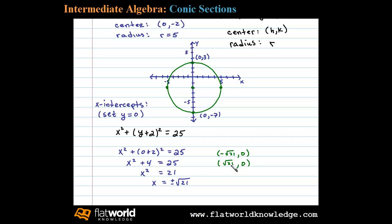The square root of 21 on a calculator is about 4.6, so that looks pretty good. This point would be positive square root of 21 comma 0, and the other x-intercept is negative square root of 21 comma 0.